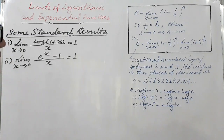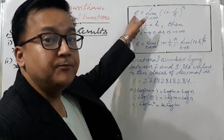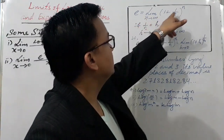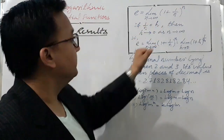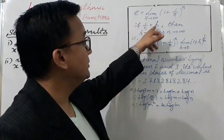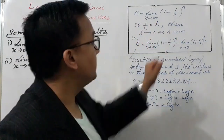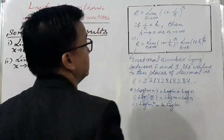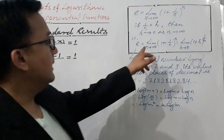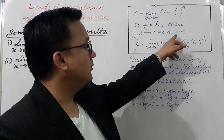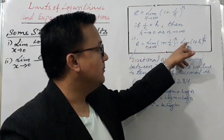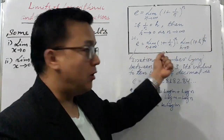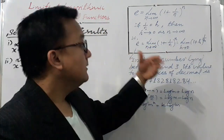Before starting the standard results, I would like to introduce e, which is an irrational number. e is defined as the limit of (1 + 1/n) raised to power n as n tends to infinity. If we suppose 1/n = h, then h tends to 0 as n tends to infinity. So the value of e can be written as the limit of (1 + h) raised to power 1/h as h tends to 0. Either form represents the value of e. Both represent the value of e.